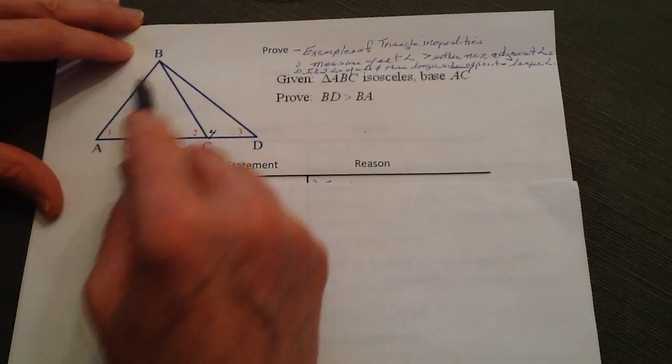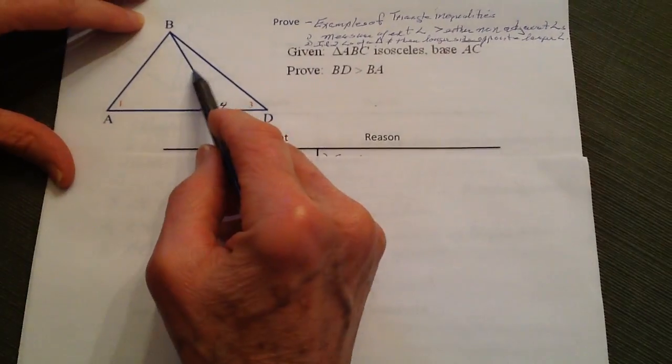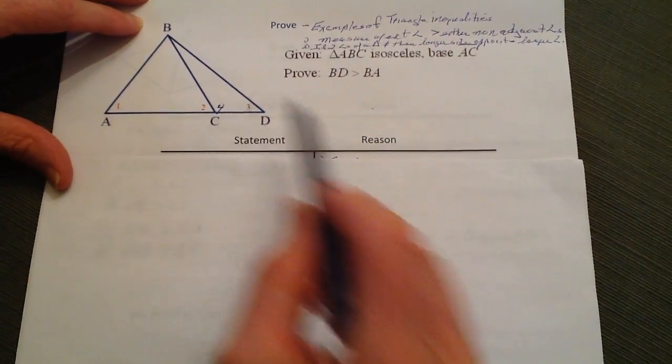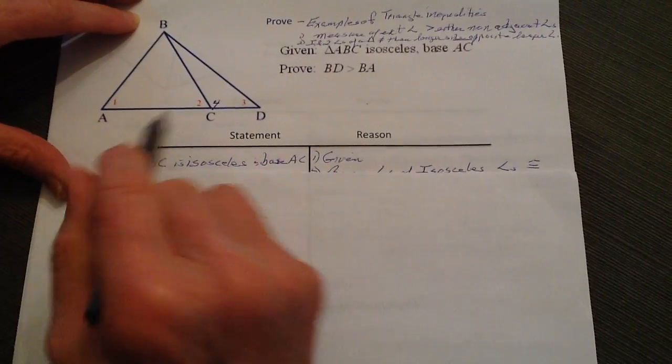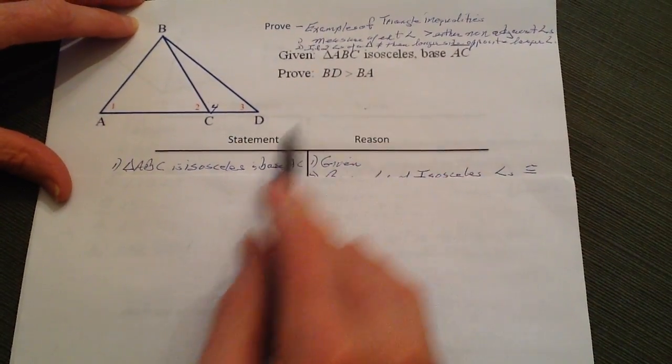we know that if it's an isosceles, that means this leg and this leg are the same, and therefore these angles are going to end up being the same. So let's go ahead and put down our first given. All I did was repeat what I have up here in the given.